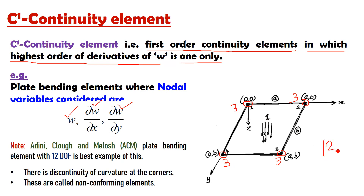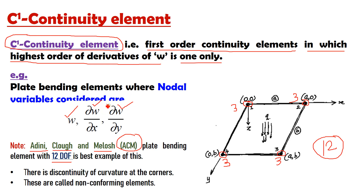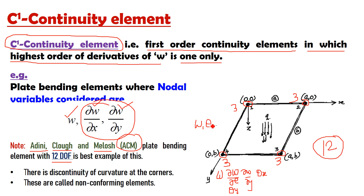It means at each node there are only 3 degrees of freedom per node, giving a total of 12 degrees of freedom. So this is called the 12 degree of freedom plate bending element, suggested by Adini, Clough and Melosh, which is also called the ACM plate bending element. This is the best example of a C1 continuity element, where the 3 degrees of freedom are W, DW/DX (called theta_Y) and DW/DY (called theta_X), giving 12 total degrees of freedom.